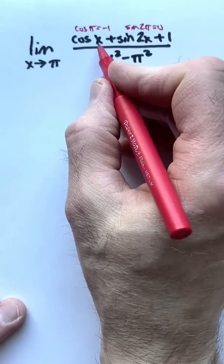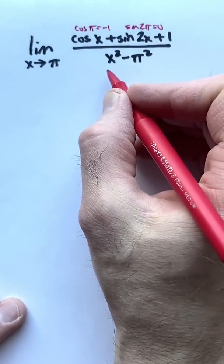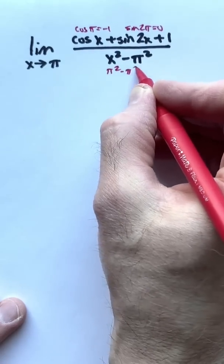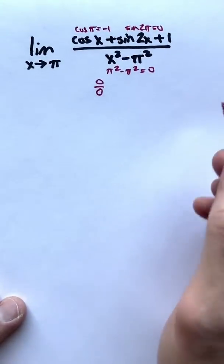And ultimately we get negative 1 plus 0 plus 1 is 0, and then when we plug in pi in the bottom, we get pi squared minus pi squared is 0. This ultimately is a 0 over 0 indeterminate form.